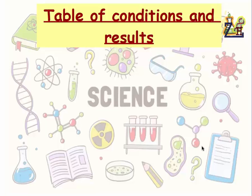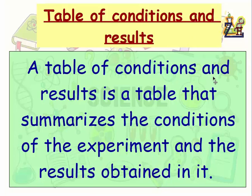What is a table of conditions or a table of conditions and results? A table of conditions and results is a table that summarizes the conditions of the experiment and the results obtained in it.